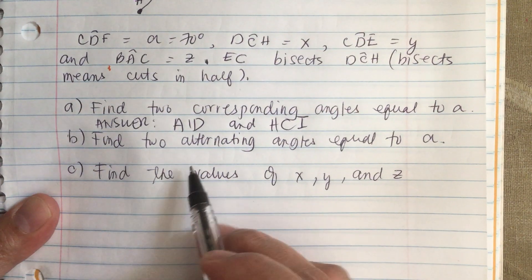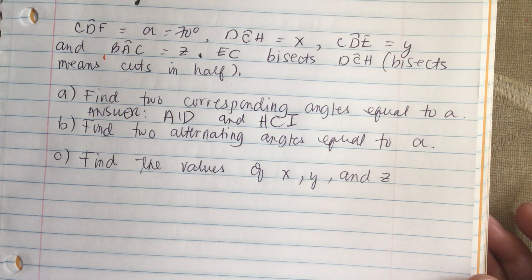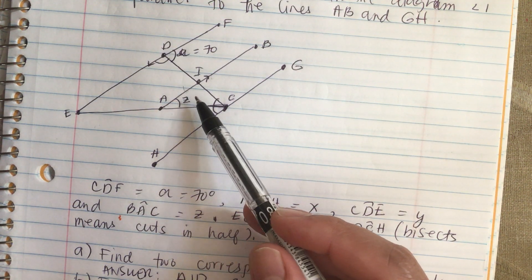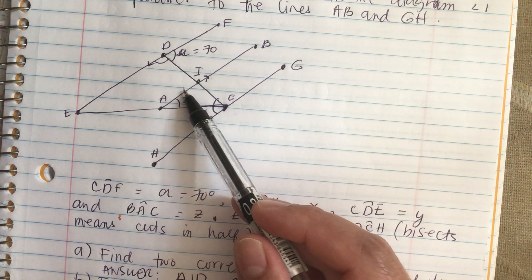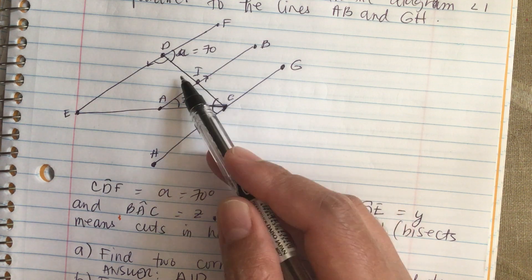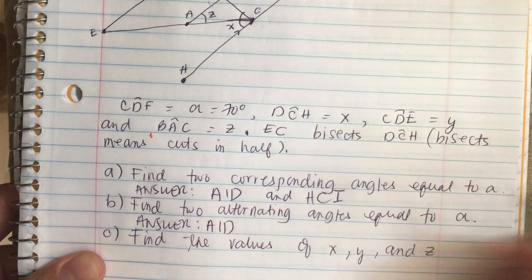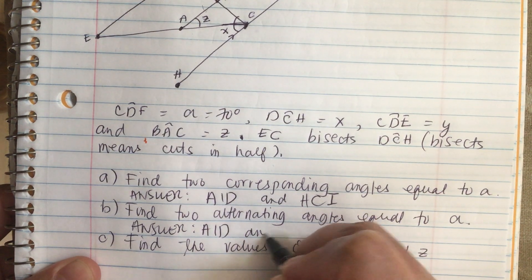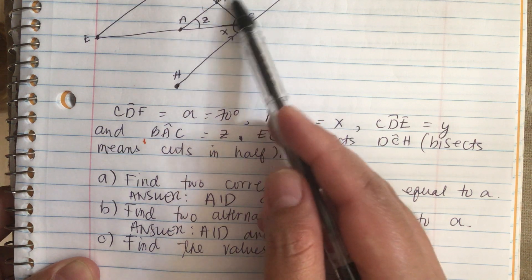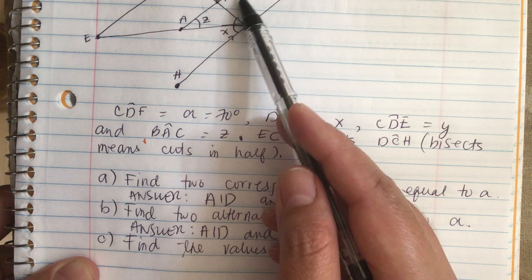Part B: find two alternating angles equal to A. Alternate angles are non-adjacent angles on either side of the transversal. The two alternate angles equal to A are angle AID and angle BIC. These two angles are equal to A, so both are 70 degrees.